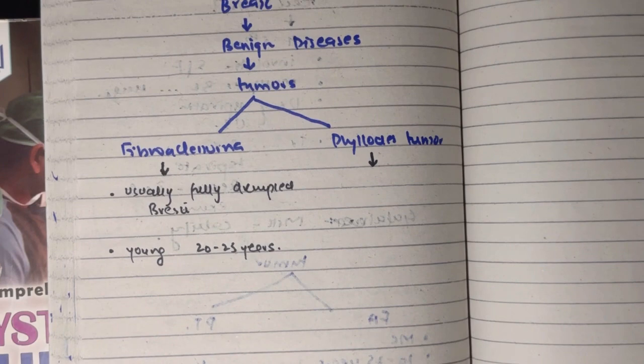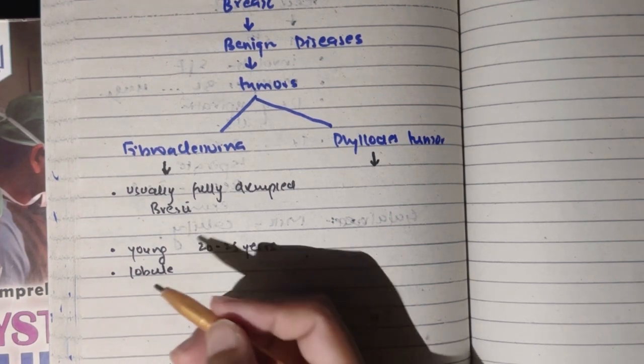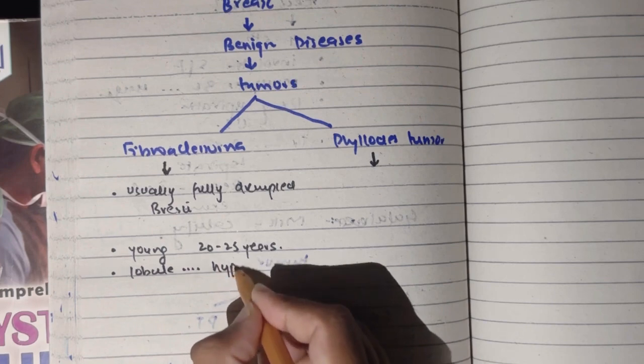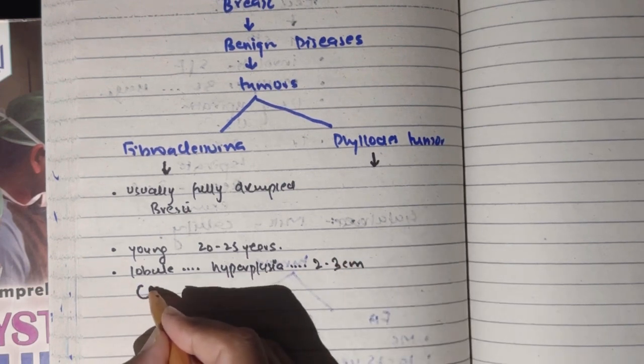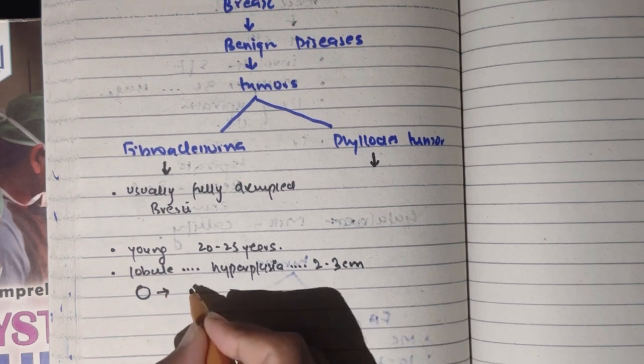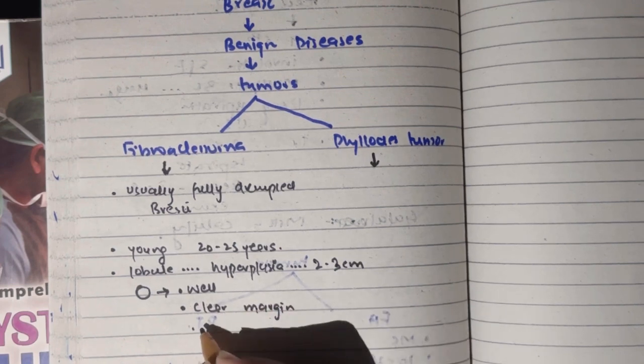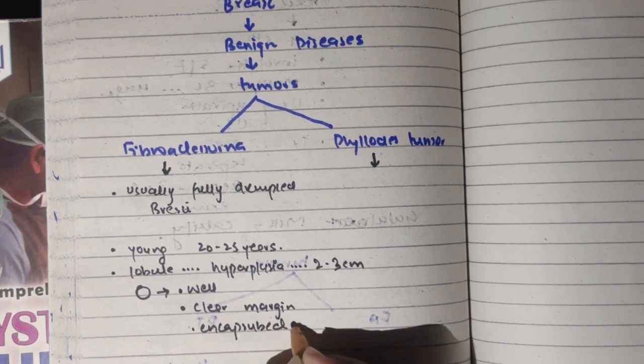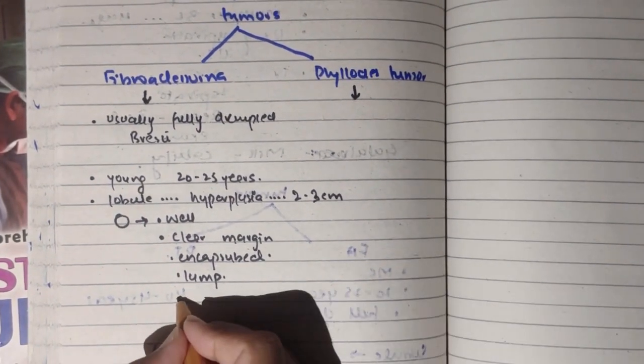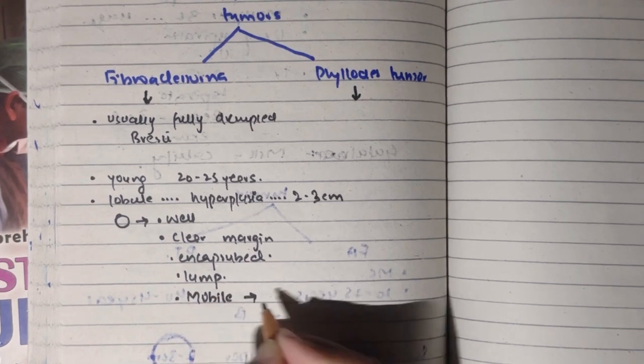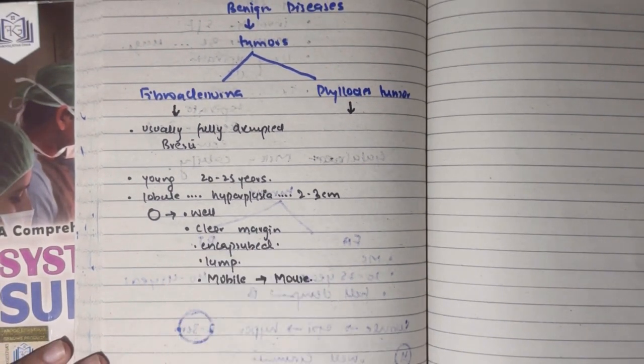The histology shows that the lobule undergoes hyperplasia. When the lobule is more than 2-3 cm, it is called a lump and this lump is well-defined or well-circumscribed. It has a very clear margin and is encapsulated. So well-circumscribed with clear margin, encapsulated. Most important thing is that it is mobile in all directions.